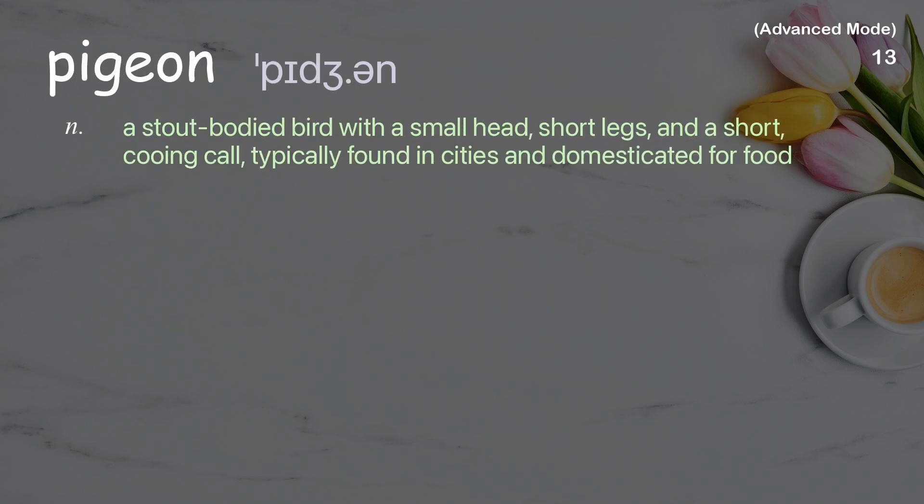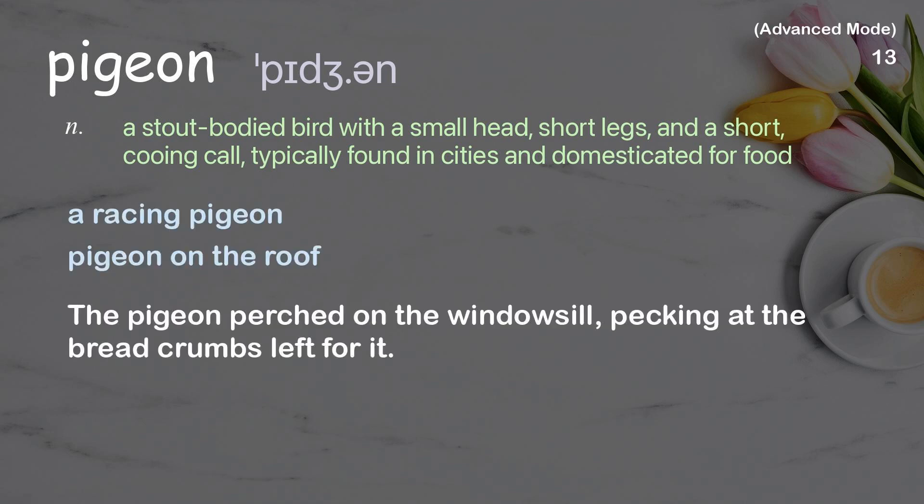Pigeon: a stout-bodied bird with a small head, short legs, and a short cooing call, typically found in cities and domesticated for food. Examples: a racing pigeon, pigeon on the roof. The pigeon perched on the windowsill, pecking at the breadcrumbs left for it.